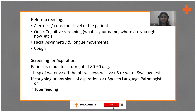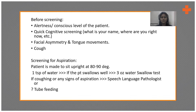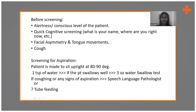Before screening, always check the patient's awareness and alertness level with a quick cognitive screening — ask their name, where they are, what they ate. Check for facial asymmetry, any drooping or weakness. Check tongue movements for flaccidity or sluggishness, and importantly, check for a voluntary cough. If any of these are abnormal, do not proceed with swallow screening.